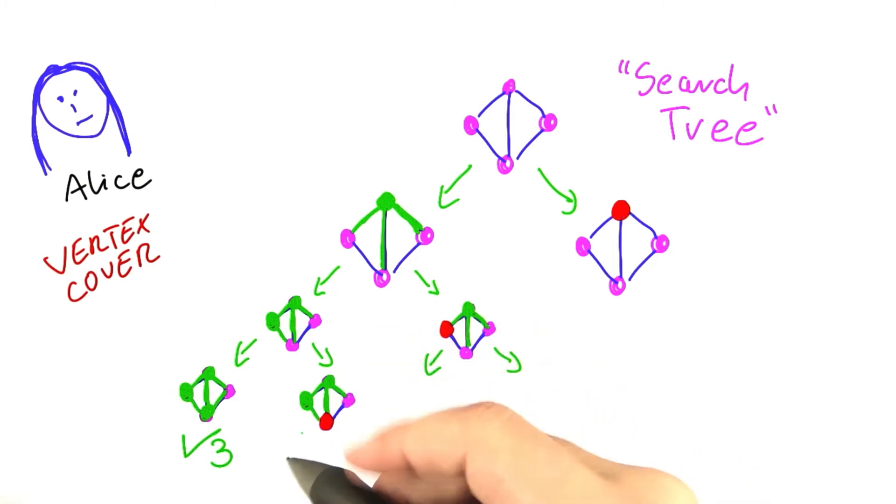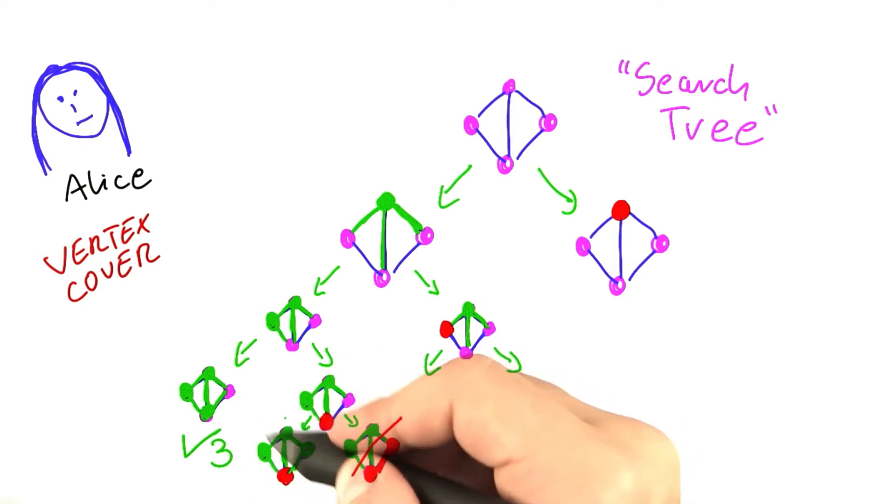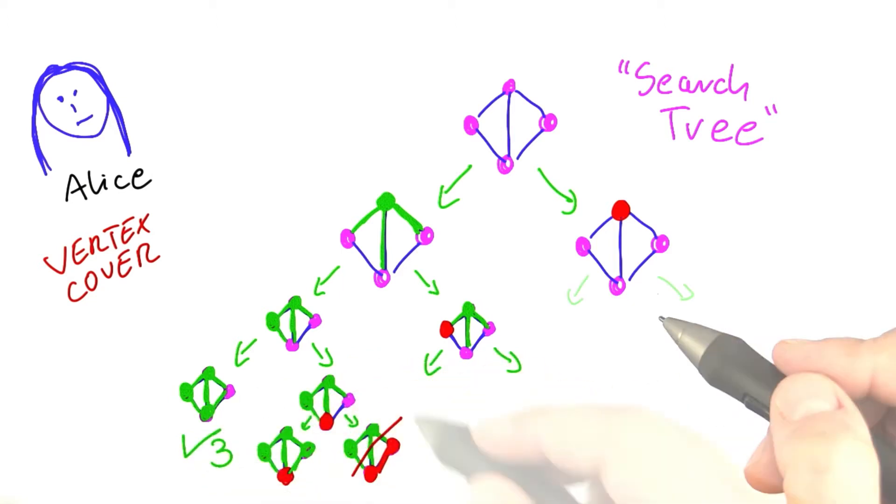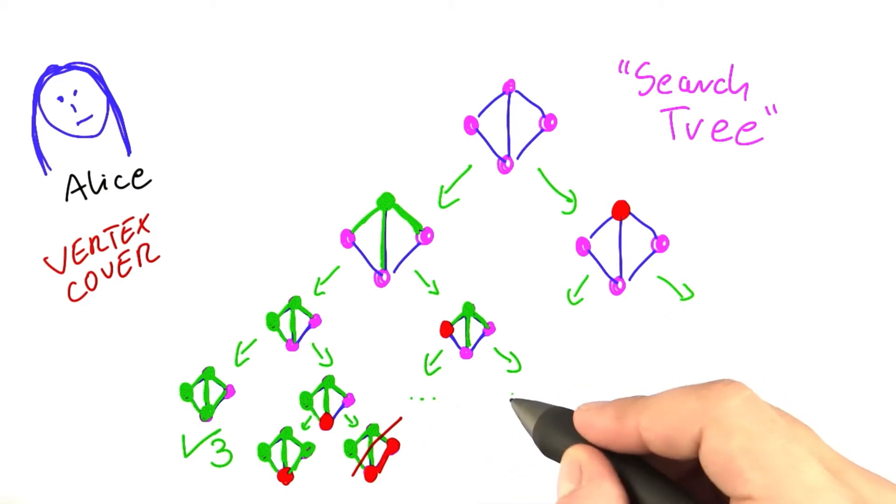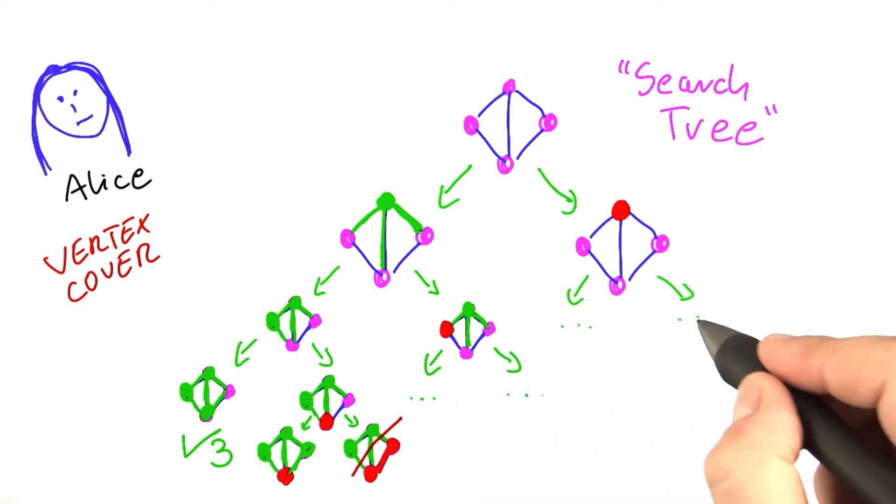Over here, we still have to consider two possibilities. We still need to make a decision here on the right side. So we can either put it into the vertex cover or not. And so the solution here, it's not a solution because it's not valid. And here again, we have found a solution of size three or a vertex cover of size three. So now we still have to continue here for these four points where we left off earlier.